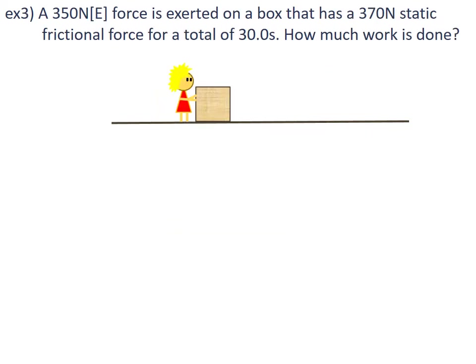Example 3: A 350 newton east force is exerted on a box that has a 370 newton static frictional force for a total of 30.0 seconds. How much work was done? The applied force is 350 newtons east and the static frictional force is 370 newtons west, so negative 370 newtons east.